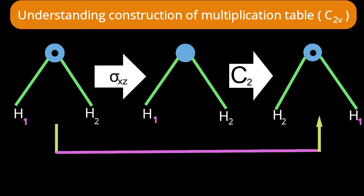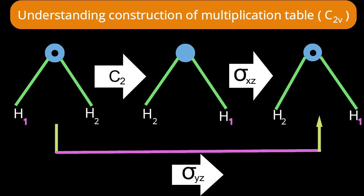Comparing original and resultant structures: in the original, hydrogen one is to the left; in the result, it is to the right. In the original, the nose points toward us; in the result, the nose still points toward us. The operation that produces this change is σyz — the plane perpendicular to the water molecule. Reflecting through σyz sends hydrogen one to the right while the nose remains toward us. Therefore, C2 × σxz = σyz.